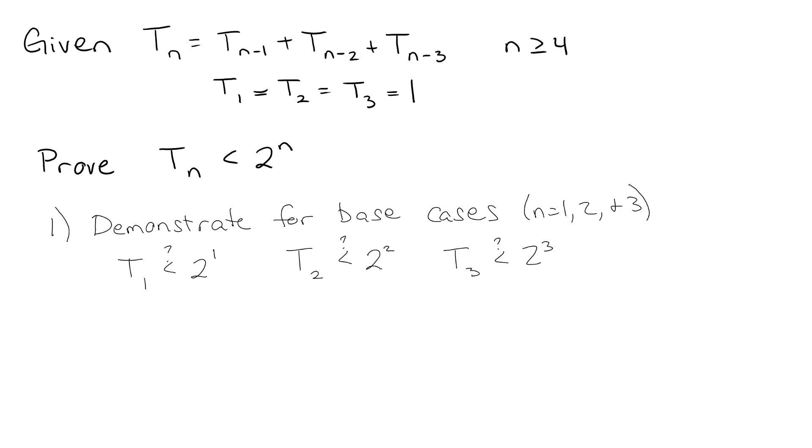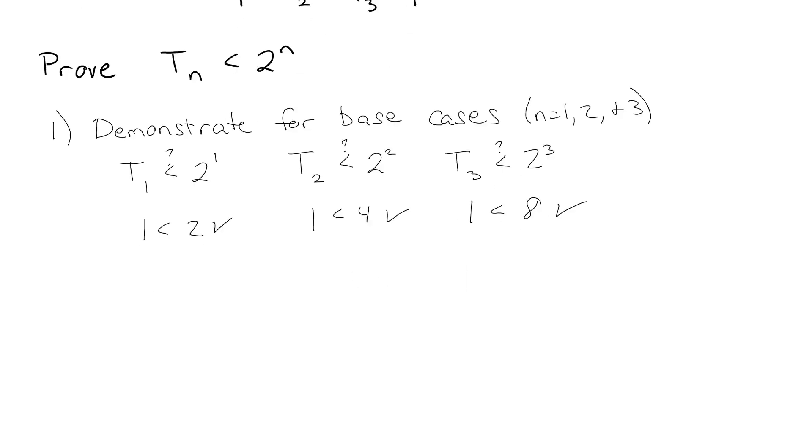And in fact it is because we know that all of these are 1 because that's what we're showing right here. We're given that all those values are 1. So indeed 1 is less than 2, 1 is also less than 4, and 1 is also less than 8. So we're actually totally fine.